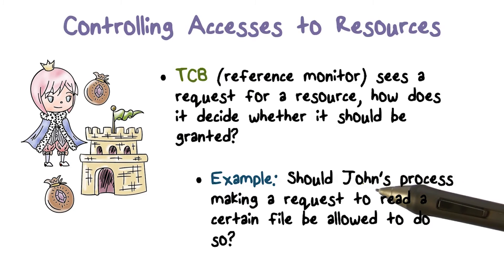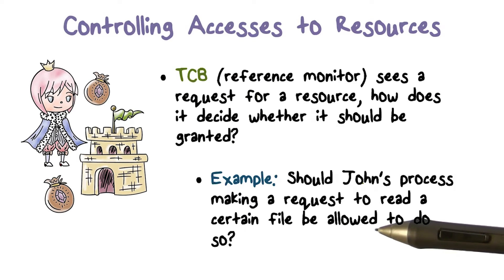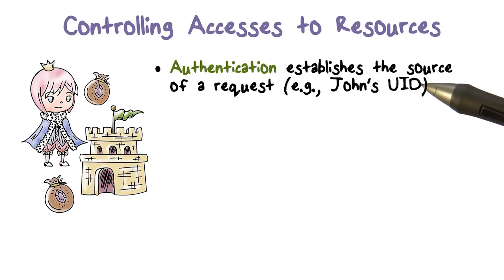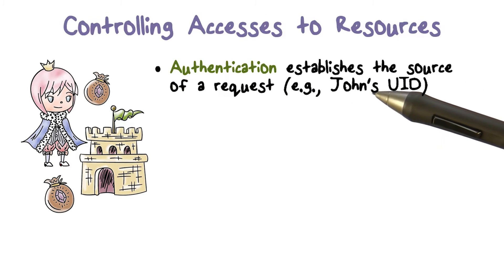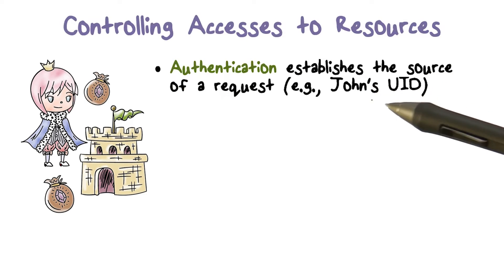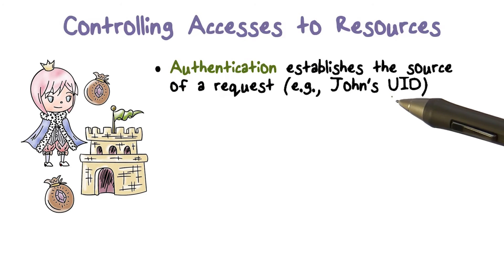The idea here is that references have to be monitored, and we have to make some sort of decision when a request comes — whether it should go ahead or be denied. Authentication basically tells us when an application or process makes a request, on whose behalf that request is being made. In John's example, it's a process that John launched, so it will have John's user ID or UID. Authentication is how we know that this particular UID should be associated with the process.